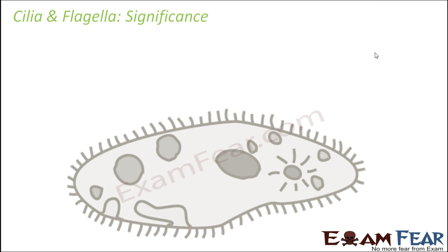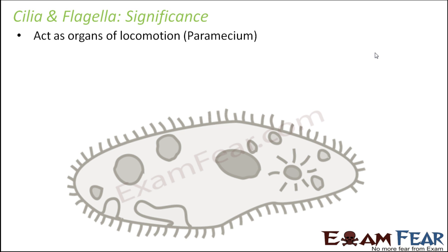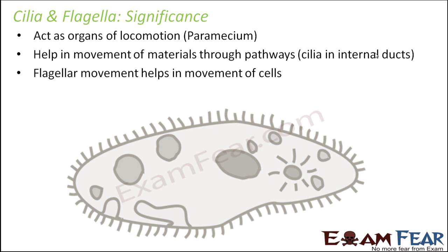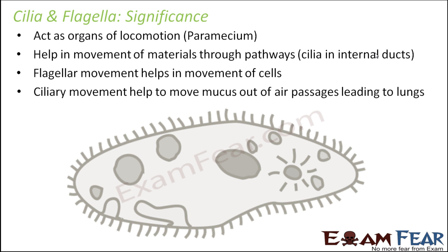Cilia and flagella act as organs of locomotion — for example, in paramecium, cilia act as the locomotory organ. They also help in movement of materials through pathways without the cell itself moving. For example, ciliated columnar epithelium cells in the respiratory tract do not move themselves but allow movement of mucus. Flagellar movement helps in movement of cells. Ciliary movement helps to move mucus out of air passages leading to the lungs.